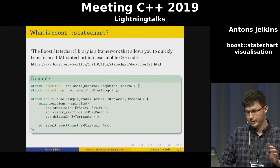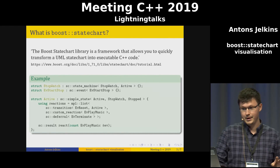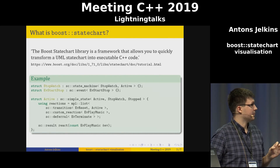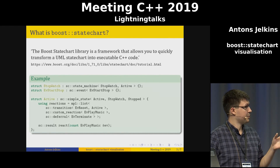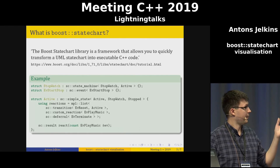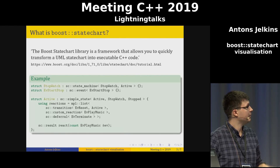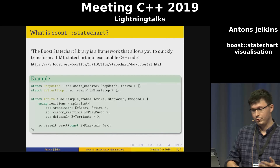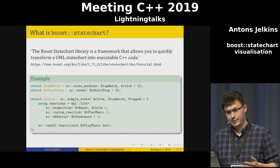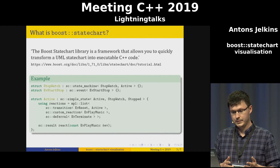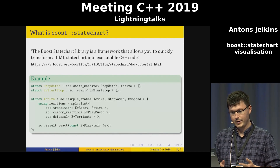If you don't know what Boost State Chart is, here is an example. We define a state machine or state chart, we have some events, and we have states which have reactions like transitions to other states if some event comes, some custom reactions, and some deferral.